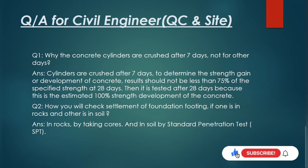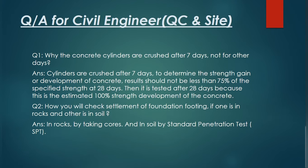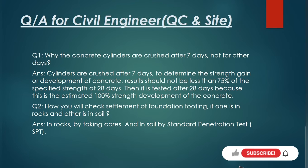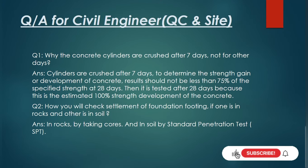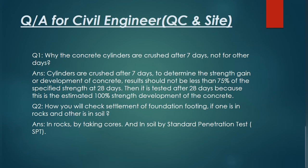These questions are helpful for a KWA engineer, KOC engineer, and site engineer. Our first question is: why are concrete cylinders crushed after seven days and not other days? Why do we need seven days to check the concrete cylinder crushing strength? Answer: cylinders are crushed after seven days to determine the strength gain or development of concrete. The result should not be less than 75 percent of the specified strength at 28 days.